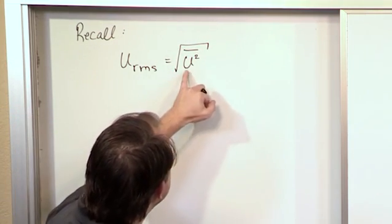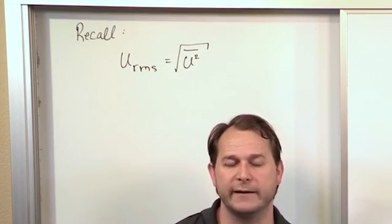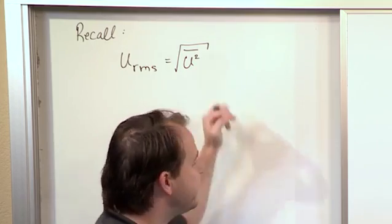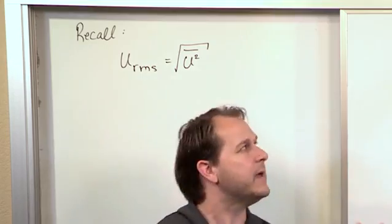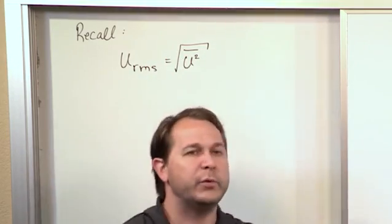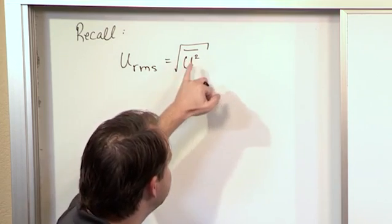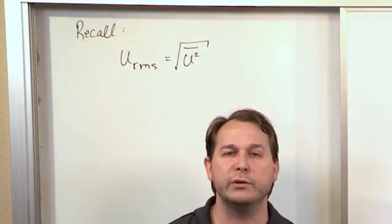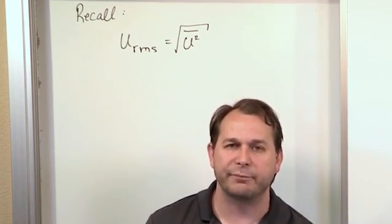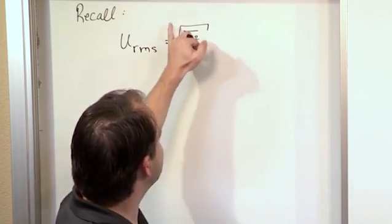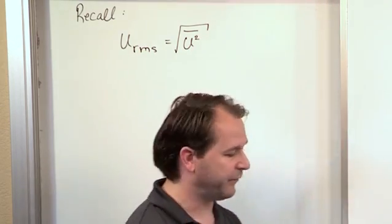And when you think about it, the speed is in meters per second, or the velocity is in meters per second. When we square that, we get meters per second all squared. Then when we take the square root, we get back meters per second. So because we're squaring the speed and doing the averaging and then we take the square root, the units that we get from this calculation at the end of the day is going to be back to meters per second.